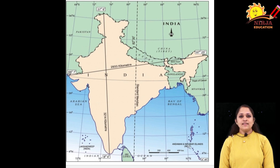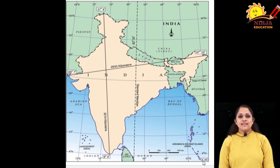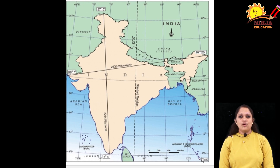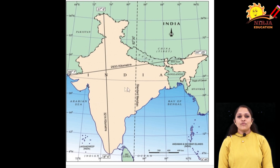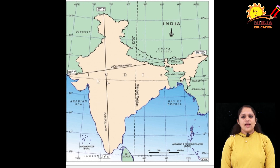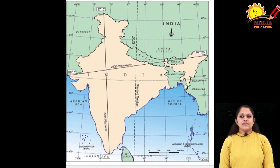The southernmost point in Indian territory, located in Great Nicobar Island, is Indira Point at 6 degrees 45 minutes north. Kanyakumari is the southernmost point of the Indian mainland. One more important line here is the Tropic of Cancer, which crosses the country at 23 degrees 30 minutes north, dividing the country into two equal parts — the northern and southern portions.